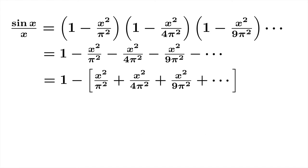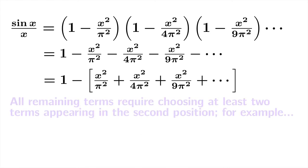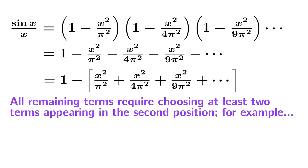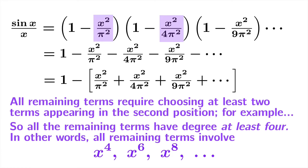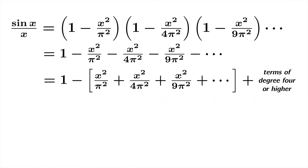And at this point, we're going to observe that all remaining terms require choosing at least two terms appearing in the second position. So for example, you might have to choose these two second positions. And when you take that product, you're going to get x to the fourth times something. So all the remaining terms have degree at least 4. In other words, they're all going to have terms that involve x to the fourth, x to the sixth, x to the eighth, and so on. And so what we'll do is we'll just add on a little notation here that says, well, to expand this, we'll have to have a bunch of other stuff, but it's going to be all terms of degree 4 or higher.